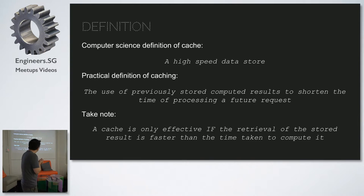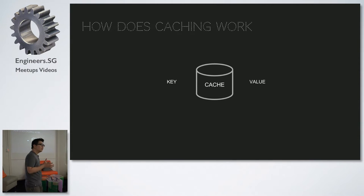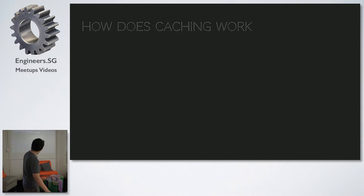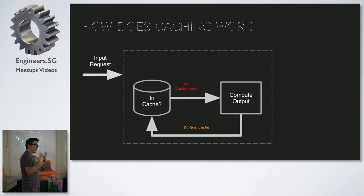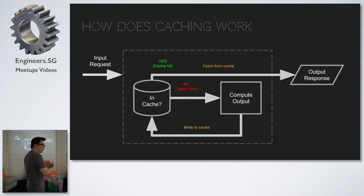Caching is only effective if the retrieval of the stored result is faster than computing it — otherwise it defeats the point. Most caches use a key-value system: you pass it a key, it returns a value, and the value is usually way larger than the key. In a typical transaction, an application will check if the request is already in the cache. If not, it's called a cache miss — you compute the result, write to cache, then send the response. Next time around, it's in the cache and you just fetch it right away.